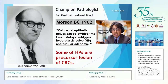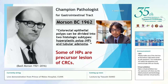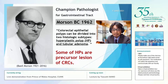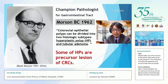In 1962, Professor Morson, a famous pathologist, classified a colorectal tumor into hyperplastic polyp and adenoma, and he described hyperplastic polyp as a non-neoplastic region. But later studies have shown that some hyperplastic polyps are recognized as a pre-cancerous region.